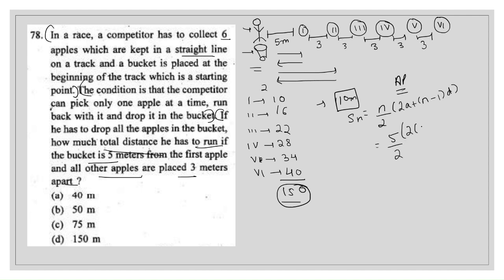So a equals 16, and the series for the remaining 5 apples is 16, 22, 28, 34, 40 — with common difference d = 6. Using the formula: S = 5/2 × [2(16) + (5-1)(6)] = 5/2 × [32 + 24] = 5/2 × 56.